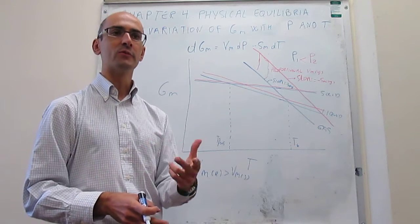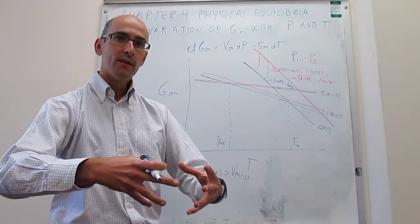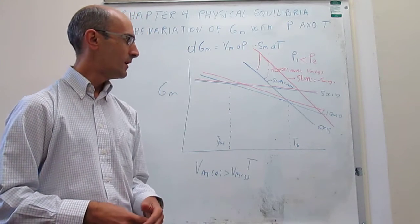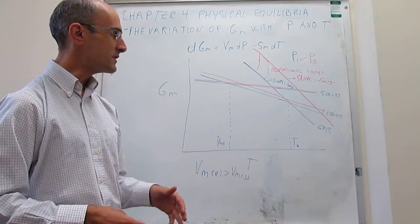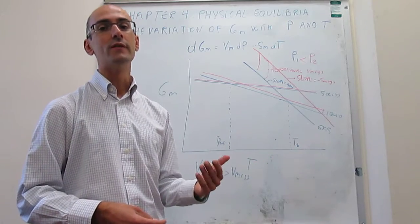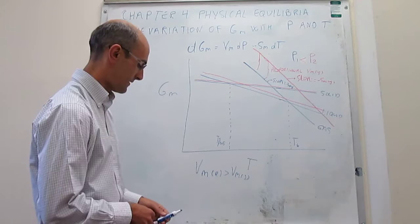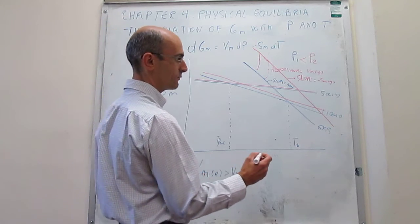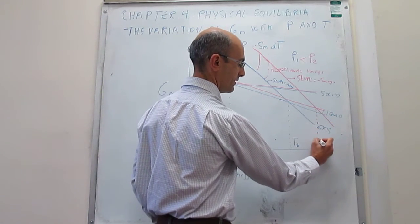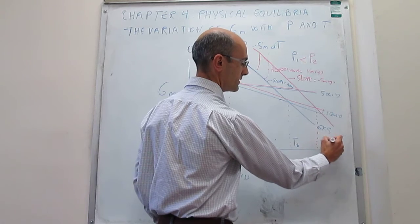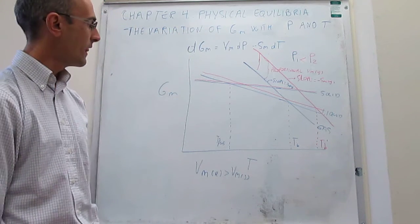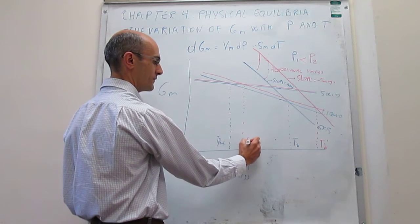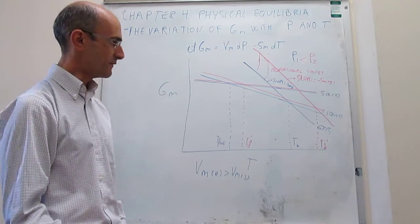That happens for most substances except for water. Water is exactly the opposite: when you actually decrease the temperature, the volume expands. We'll examine how that will change this graph in the next video. For now, what we can see is what happens to the crossings of the lines under the new pressure. Examining the red lines, the crossing between the gas and liquid lines now occurs at a new point — that is your new boiling point at pressure P2 — and then the freezing point takes place further up.